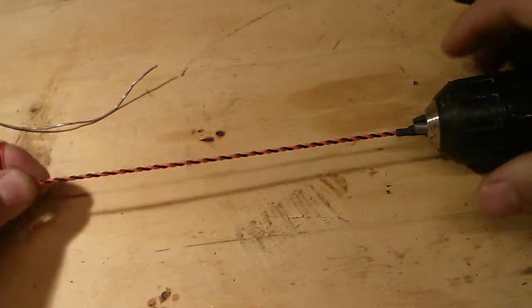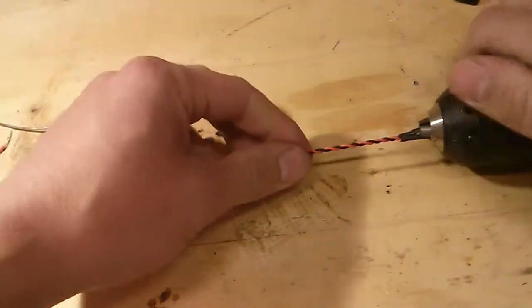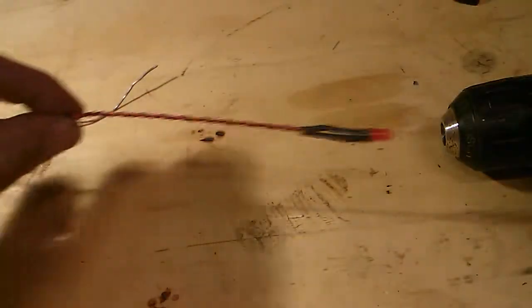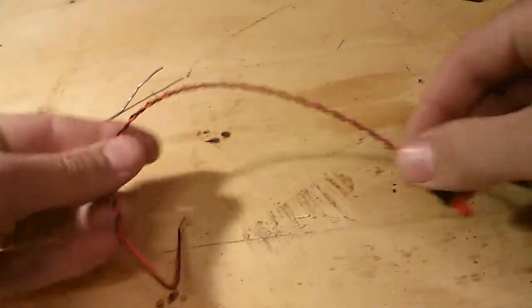Now how satisfying is that? What that does is it twists your wires together, undo the chuck, and you get this nice, neat LED on a pair of wires ready to use.